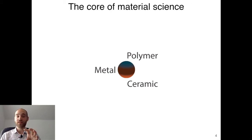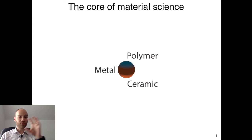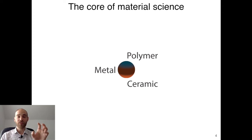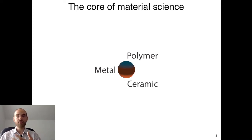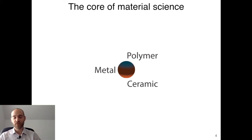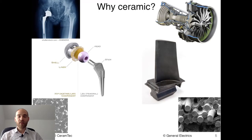Try to find objects that are mainly based on polymers, metals, and ceramics. What you'll find is that these are used in very different applications — you can recognize them very clearly. That's why we came up with these classes: because they are very, very different from one another.